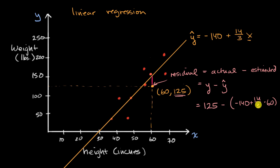Let's see, 60 divided by 3 is 20. 20 times 14 is 280, and so all of this is 140. And so our residual for this point is going to be 125 minus 140, which is negative 15.